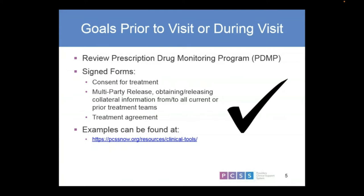Having different signed forms — such as consenting for treatment and what that treatment is going to be like, releases for other entities like family or other physicians. Getting that collateral information is so important. Then the treatment agreement — what this treatment is going to look like. Different clinics may have different policies as far as what that treatment agreement looks like, so it's important to understand what the requirements are in your system.